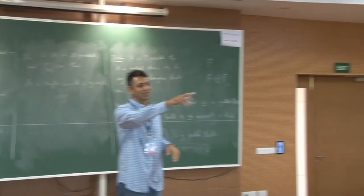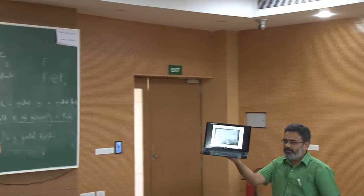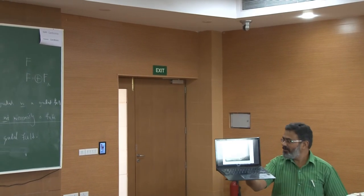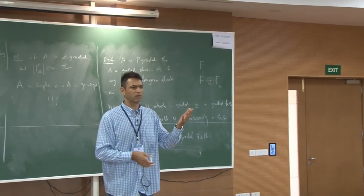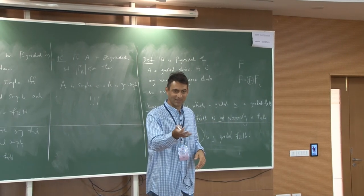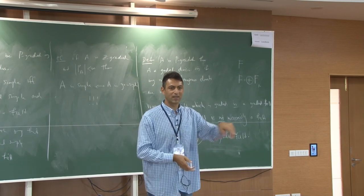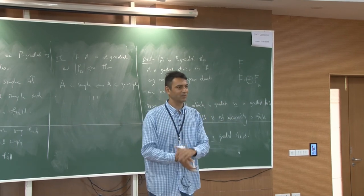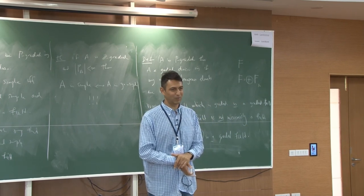This is what Hamilton wrote on that bridge — the formula i² = j² = k² = ijk = -1. The bridge in Dublin where Hamilton engraved this formula is now a historical site, and there is a Hamilton walk where people retrace the route he walked that day — to the bridge, then to a church, then to an academic's house.